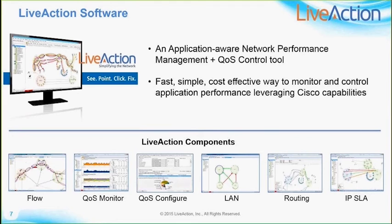LiveAction is an application-aware network performance management tool with great strengths in quality of service. These capabilities make it ideal to support the Cisco Intelligent WAN solution. LiveAction makes it simpler, faster, and easier to manage various applications across the Cisco network. It includes capabilities for system views, dashboards, up-down views, NetFlow, QoS, LAN, routing, and IPSLA — with the ability to both monitor and configure all of these.